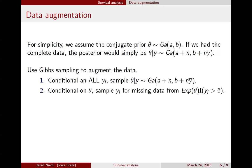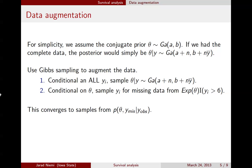Here's the Gibbs sampler idea. In the first step, we condition on all the actual data — the waiting times for all individuals — and sample theta given y, where we've imputed some values for the missing data. In the second step, we impute those missing data values: given the current value of theta, for all missing observations we sample from an exponential distribution with parameter theta, truncated to be greater than 6. We know those observations had to be greater than 6, so we draw from this truncated exponential. Alternating these two steps creates a Gibbs sampler whose samples converge to the joint distribution.